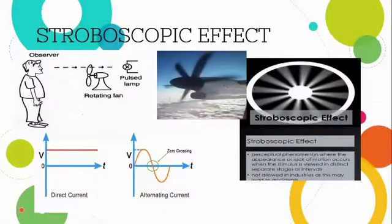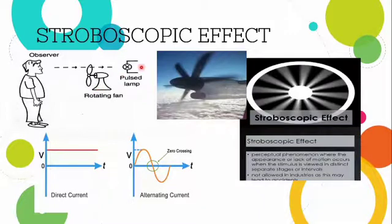So what is meant by optical illusion? The stroboscopic effect is that if one has a rotating fan and a pulsed lamp in the background, we need to know about the rotating part of any rotating machine. If we need to know about the fan, we need to know about some disturbances taking place in the machine. That unusual effect is called a stroboscopic effect.